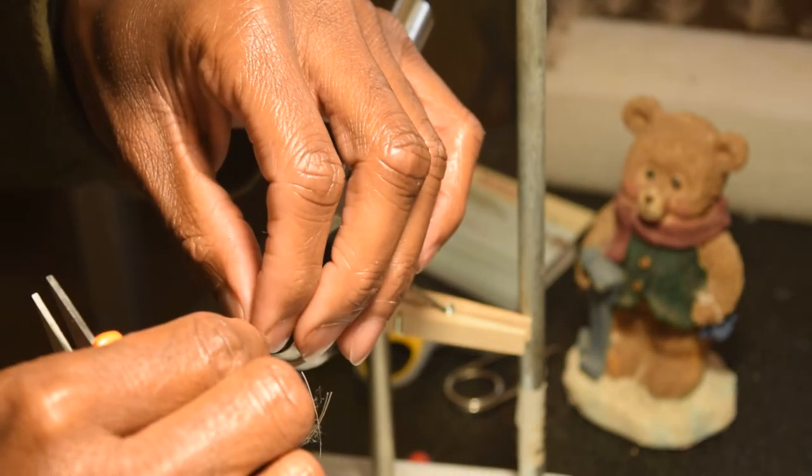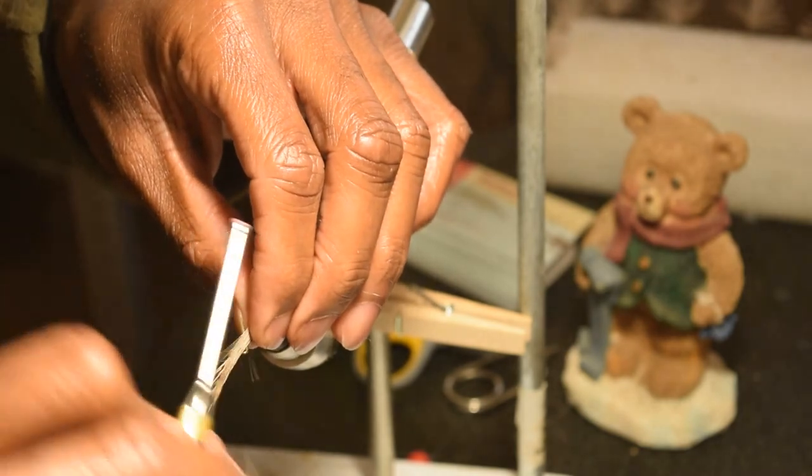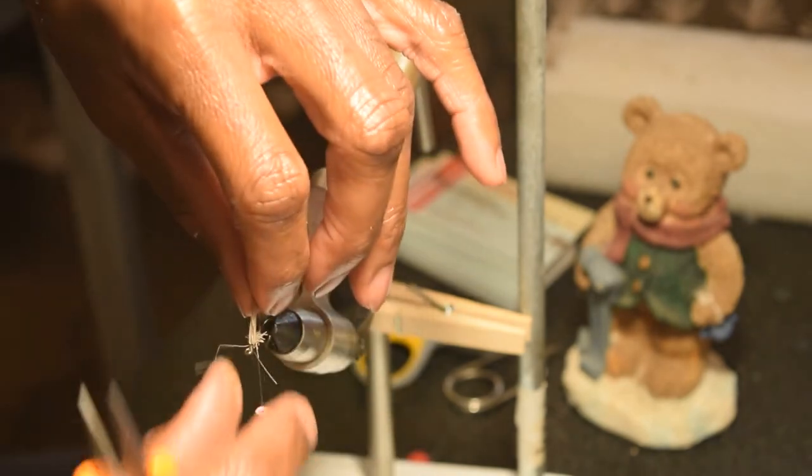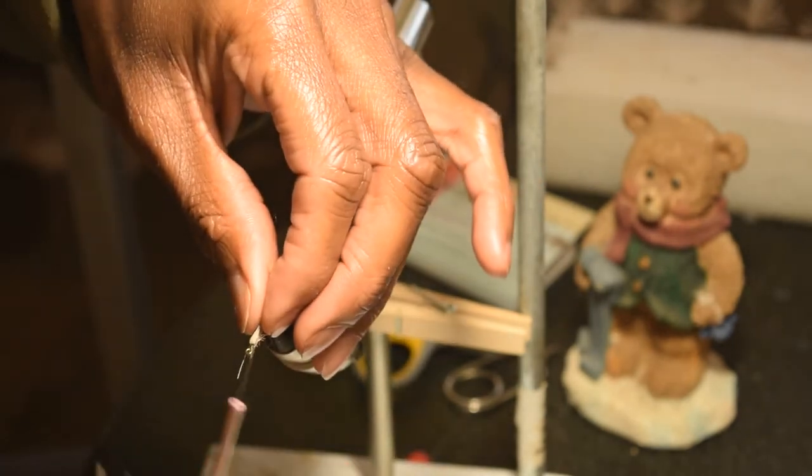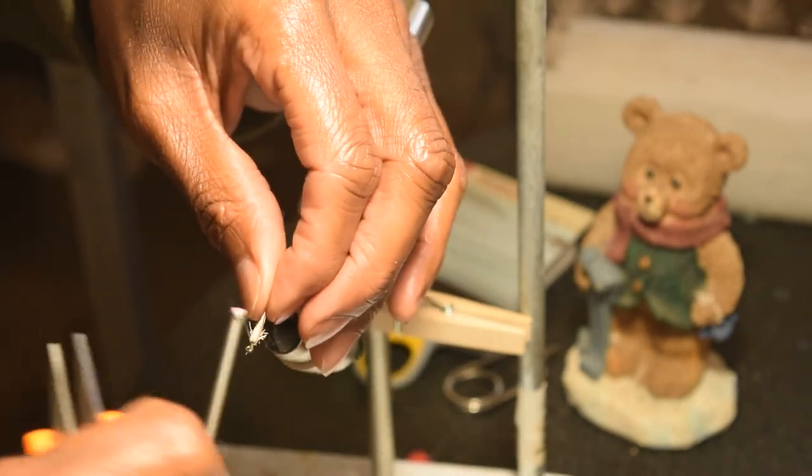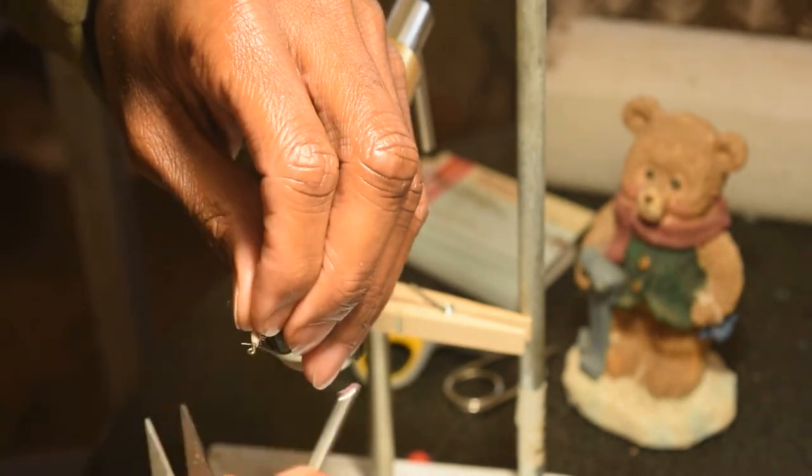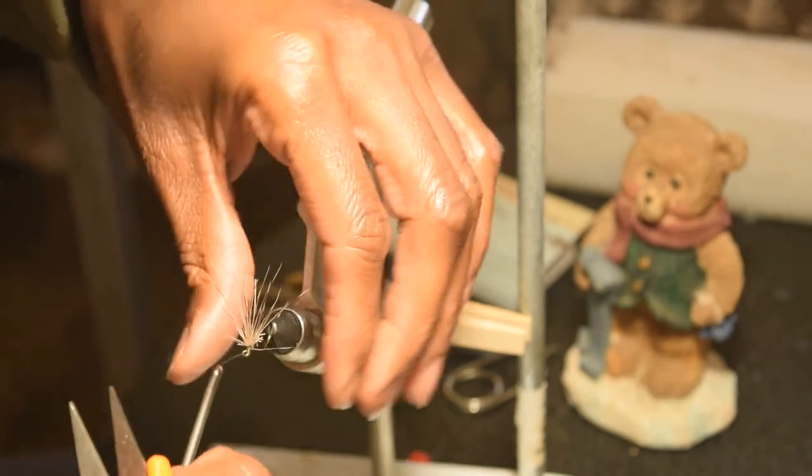Mount it on back to front like so. I mean that right there would actually catch fish believe it or not, but that's not what we're trying to do. So just like we did yesterday, pull that backward and on the front side really gather that up and build up that head.